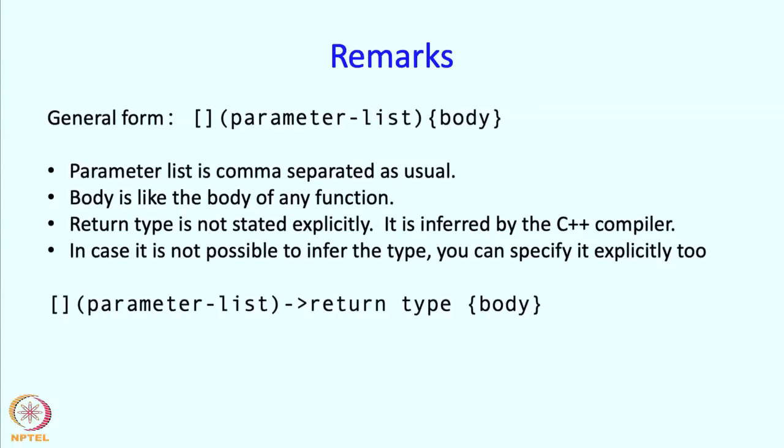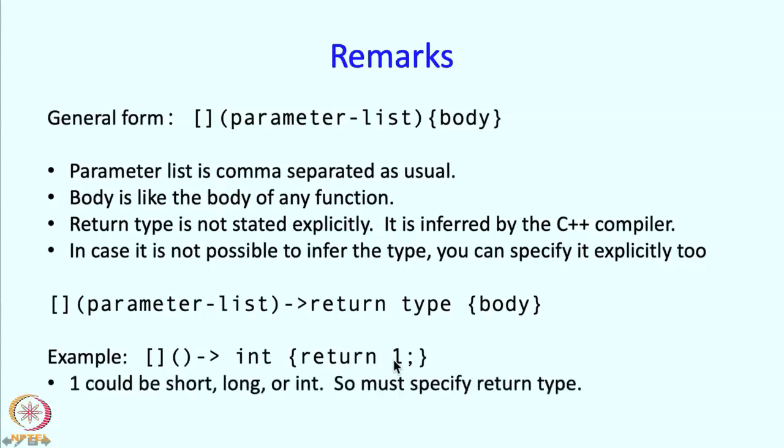So for example, here is the form, another form in which I am saying that look, this function is supposed to return something of return type this. So as an example, I might write all of this and inside I might have a return statement returning one. But now C++ compiler cannot figure out what one is. One can have several types. One could be short, one could be long, one could be int and therefore, it is desirable to specify the type and that is how you specify over here.